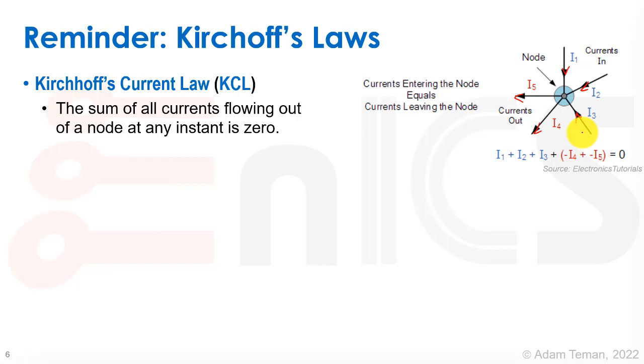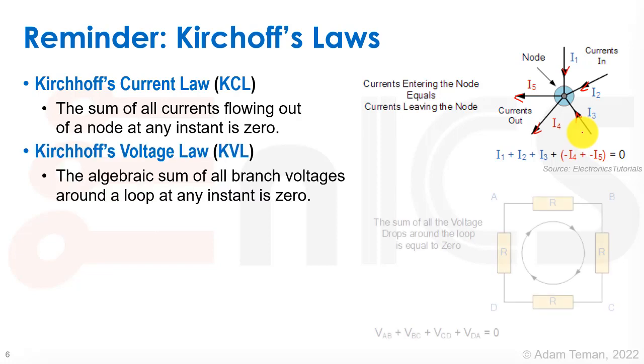And the sum of all the currents going in minus the currents going out always has to be zero. So that is the basic Kirchhoff's current law. And we're going to have to use KCL, obviously, in developing a simulator for circuits. The other one, of course, is Kirchhoff's voltage law. And that's that the algebraic sum of all branch voltages around a loop at any instant is zero. So when we sum up all the voltages that are going around a loop in the circuit, they all have to sum up to zero.